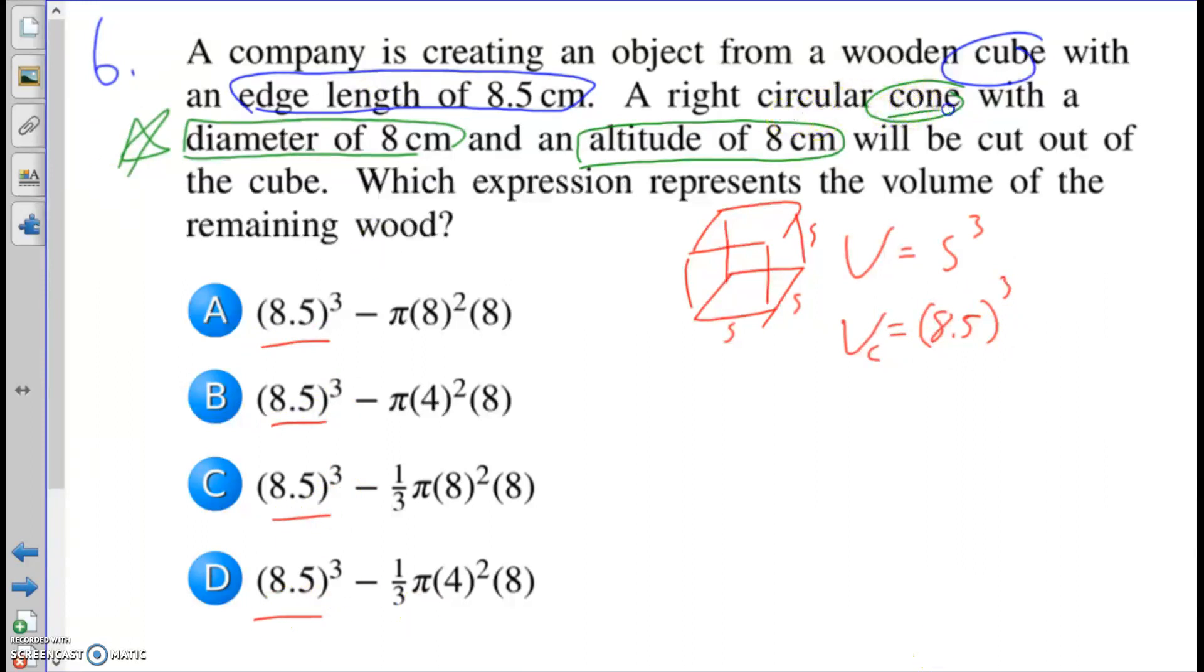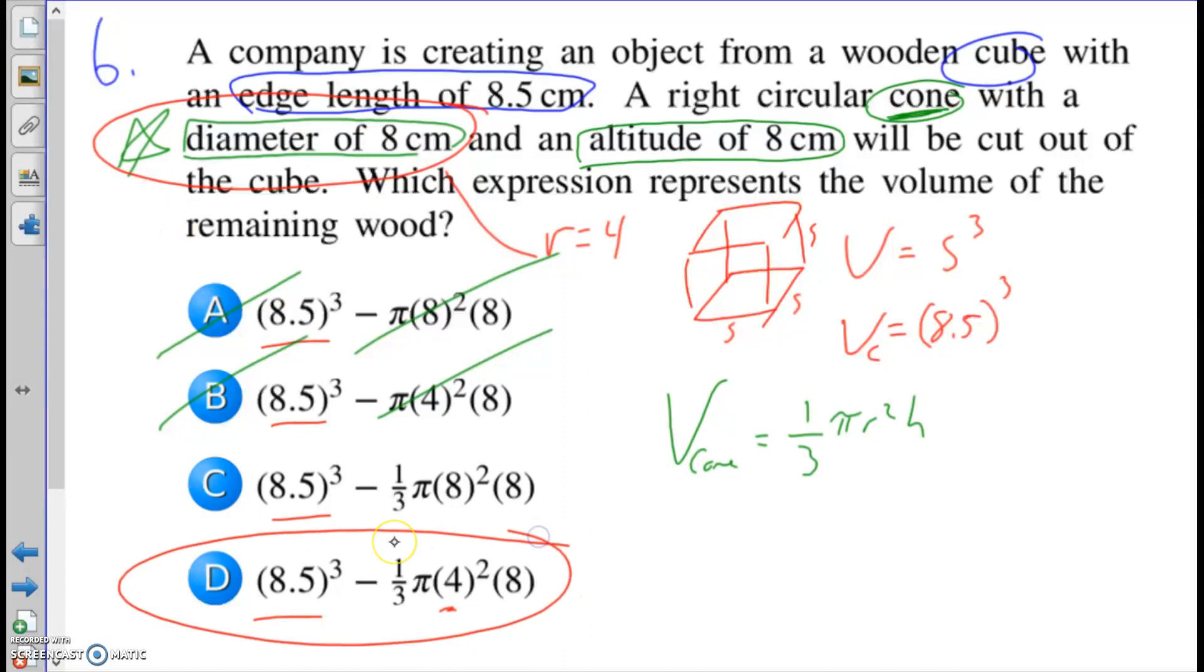So then we minus a cone's volume. And again, the volume of a cone formula, which is given to you, is 1/3 π r² h. So if we don't have a 1/3, that rules out choices a and b. So here's 1/3 π r² h. So really, the only difference here is in the r squared. That's why I started this. I knew it was going to become very relevant. If the diameter is 8, that means the radius is 4. So it's 4 squared, 8, choice d.